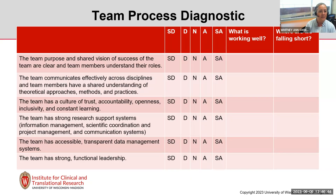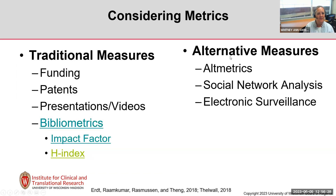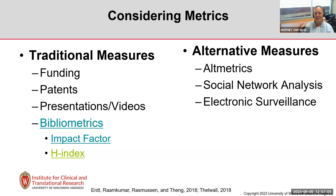Let's talk about actual metrics. In terms of traditional measures, we have funding, patents, presentations, videos, and data sets, plus bibliometrics — how many publications do you have, are you first or senior author, and measures like impact factor or h-index, which indicate how often you've published and in what types of journals. There are also alternative measurements called altmetrics — how many times a paper has been downloaded, cited, read, or opened.